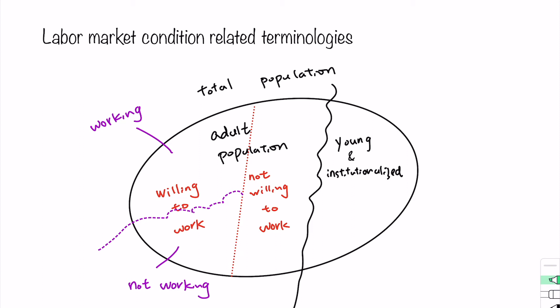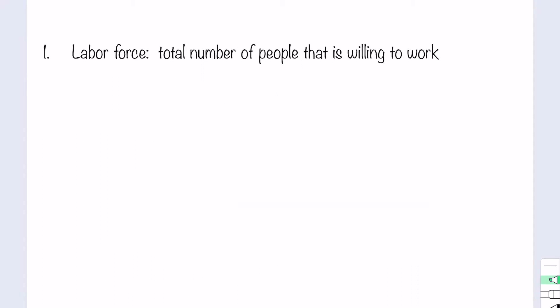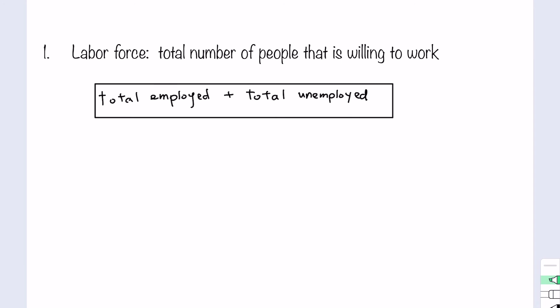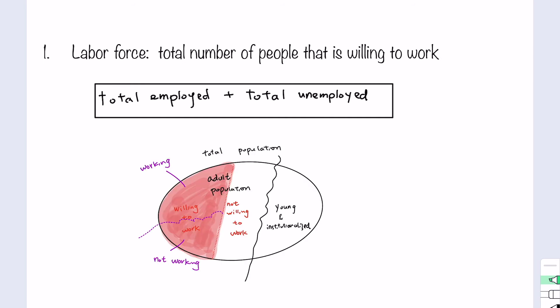Now let's introduce the labor market condition related terminologies. The first term is called labor force — it is the total number of people willing to work. By definition, it is the sum of the total employed plus the total unemployed. In the graph, it is the concept highlighted in pink, representing people who are working and those who are not working but willing to work.